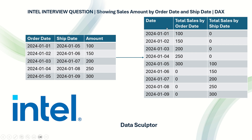The required output is a Date column with total sales by Order Date and total sales by Ship Date. This is easy to solve using SQL, but the question is to solve it using DAX.